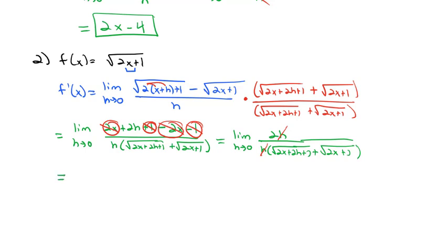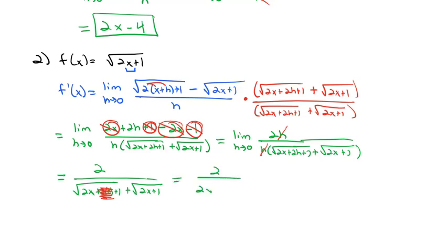Now we plug in h equals 0. We get 2 over the square root of 2x plus 0 plus 1, plus the square root of 2x plus 1. Since 2 times 0 equals 0, we have matching radicals in the denominator: two copies of the square root of 2x plus 1. So we have 2 over 2 times the square root of 2x plus 1, and the 2s reduce, leaving our final answer as 1 over the square root of 2x plus 1.